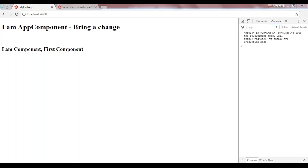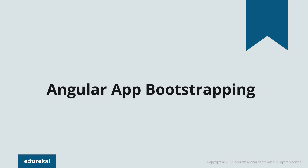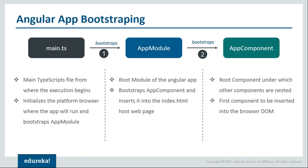Now let us talk about how app component gets inserted into index.html — how an Angular application gets started or bootstrapped. Angular applications are started with a process called bootstrap. The bootstrap process begins with the main.ts file, which is the main entry point of the Angular application. This file sets up the execution environment — the browser in our case — for running the Angular application, then bootstraps the app module, which is the root module.